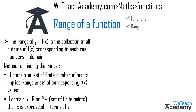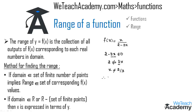Let me explain this concept with an example. We have the function f(x) = x divided by (2 minus 3x). To find the range, we first find the domain. Since the function is in the form f/g, the denominator must not equal zero: 2 minus 3x ≠ 0, which gives us x ≠ 2/3. So the domain is all real numbers except 2/3.